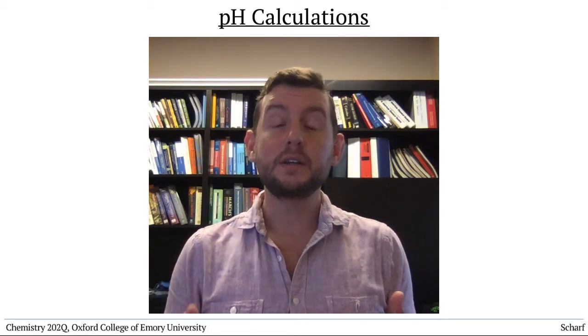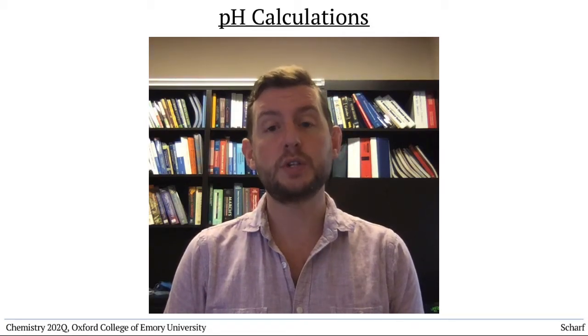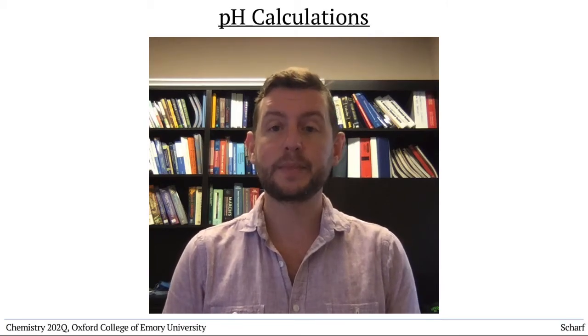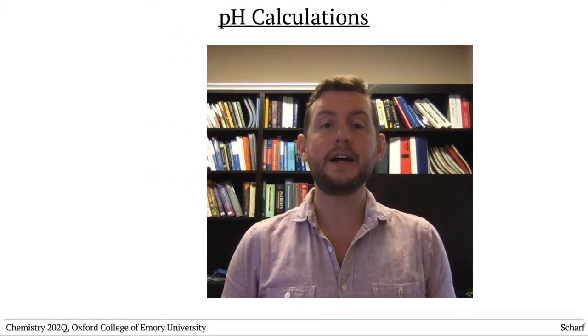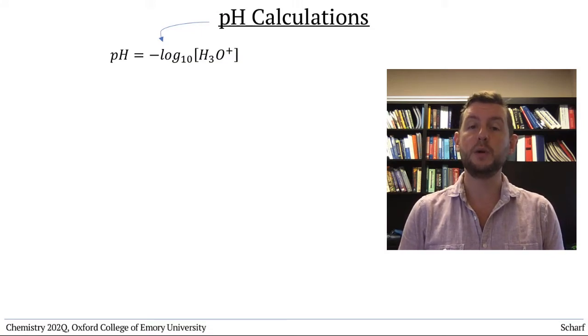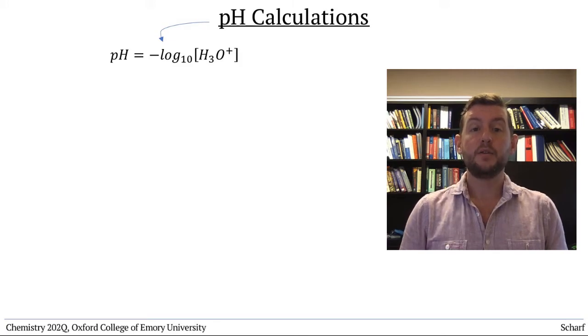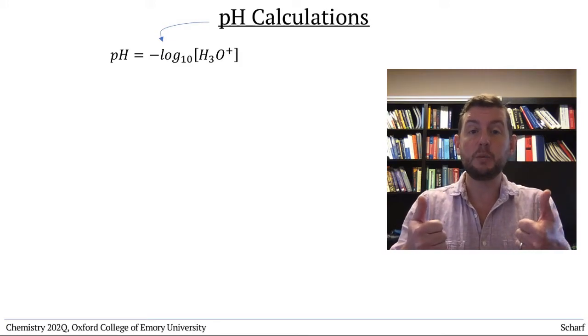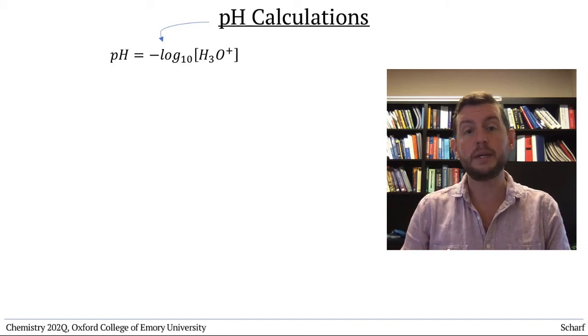One of the ways that we measure the acidity or basicity of a solution is by its pH. pH is defined as the negative log base 10 of the H3O+ concentration in an aqueous solution. The greater the concentration of H3O+, the lower the pH.